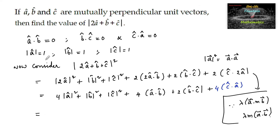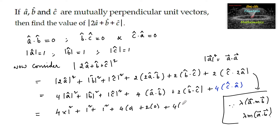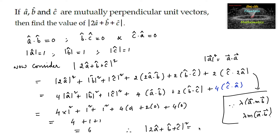Since |â| = |b̂| = |ĉ| = 1 and â · b̂ = b̂ · ĉ = ĉ · â = 0, we substitute: 4(1)² + (1)² + (1)² + 4(0) + 2(0) + 4(0) = 4(1 + 1 + 1) = 4 × 3 = 6. Therefore |2â + b̂ + ĉ|² = 6.